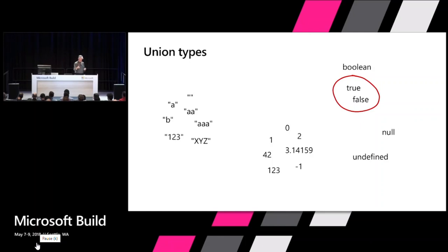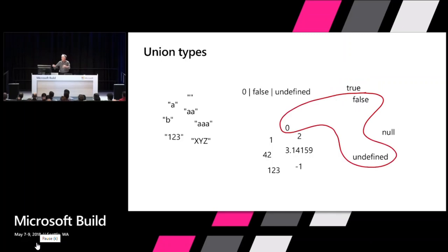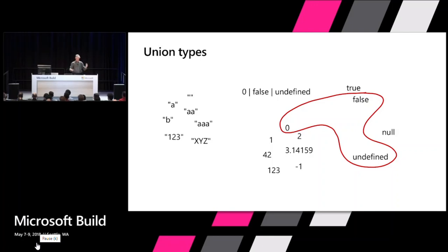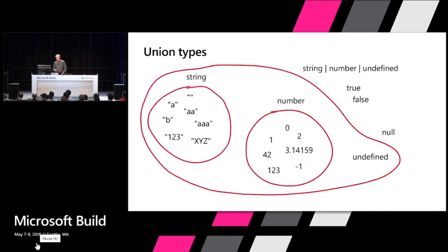Here's another type: zero or false or undefined — you can make types in any combination you want. This is very unlike C# or Java where everything is single-rooted with a base class. This is really more like reasoning about sets of possible values. You can build types like string or number or undefined, and union types are a deep enabler.